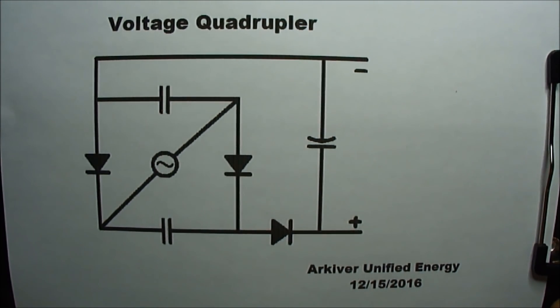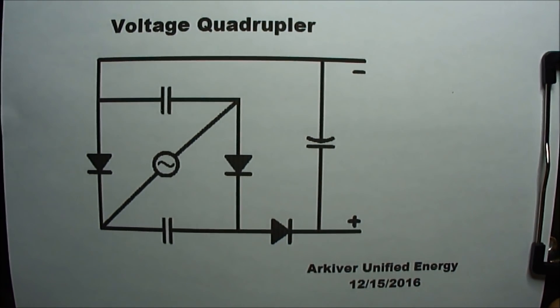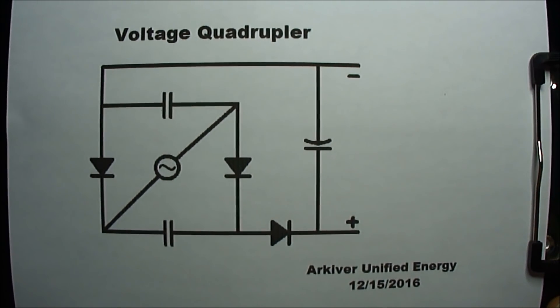This is the voltage quadrupler circuit. I wanted to see what would happen if I modified a bridge rectifier circuit. The interesting thing about this,